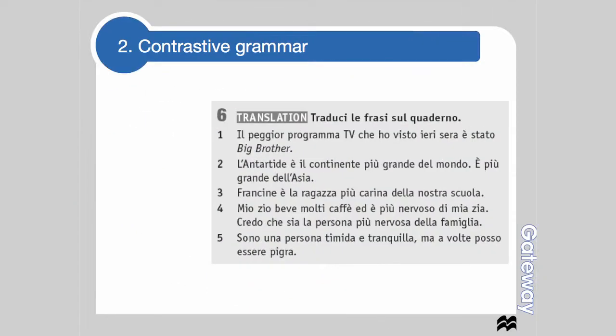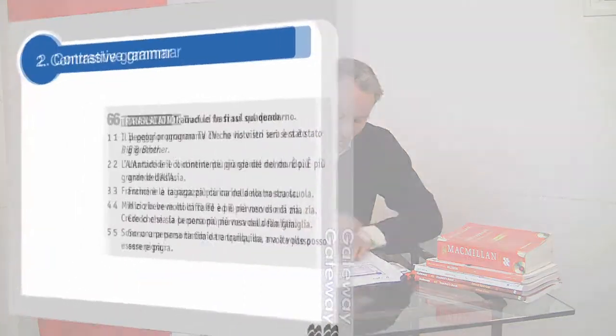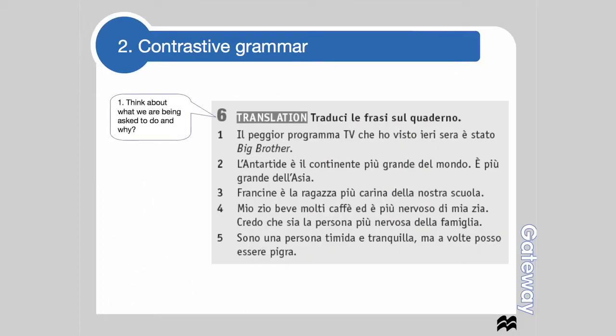Now we're going to look at contrastive grammar. Contrastive grammar is key because it really does help you to look at the language in use. In this particular contrastive grammar activity, we've got some translations. Translations really help to understand whether you've understood the grammar in English and whether you're able to take something — in this case from Italian — and put it into English.